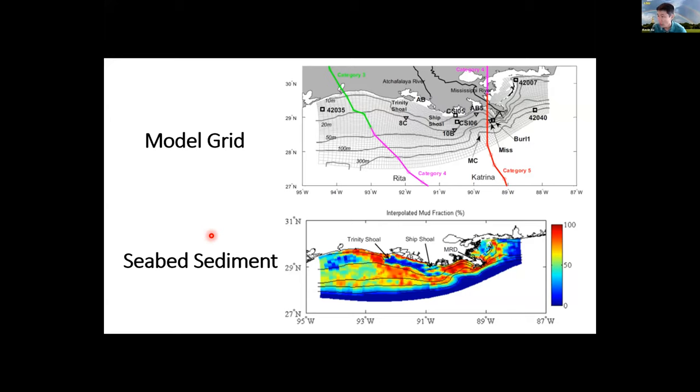Regarding the seabed sediment, we actually interpolated the mud fraction using U.S. seabed database, and we got some help from Chris Jenkins. As you can see in the inner Louisiana shelf, you have lots of red area, which is very muddy. But we do have some coarser area, which is composed of lots of sand, including several major submarine shoals. The sideline boundary is in blue, and this is artificial. We just added lots of coarse sediment along the model boundary to minimize some artifacts.